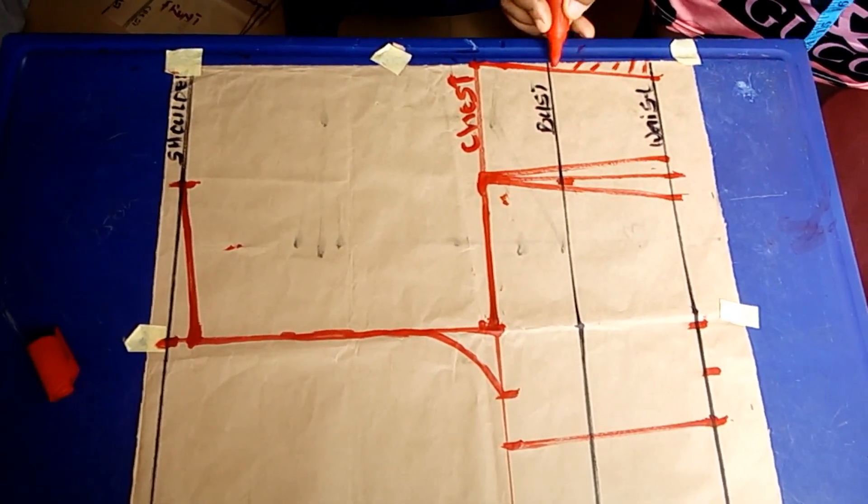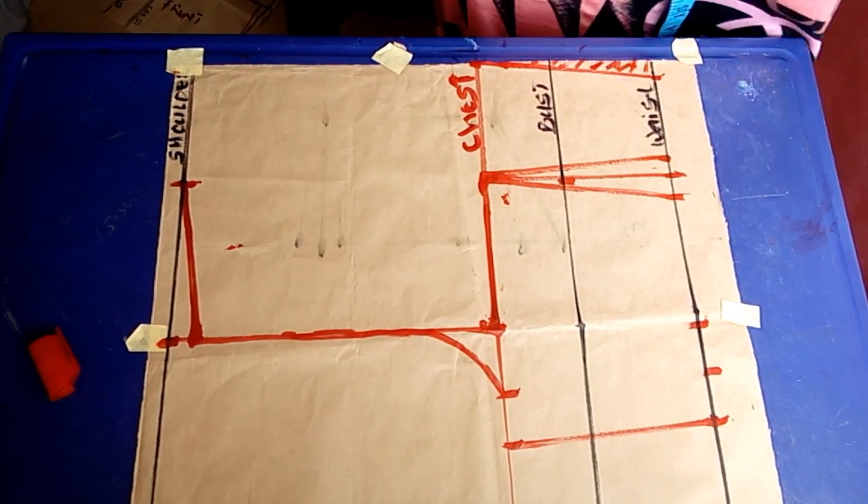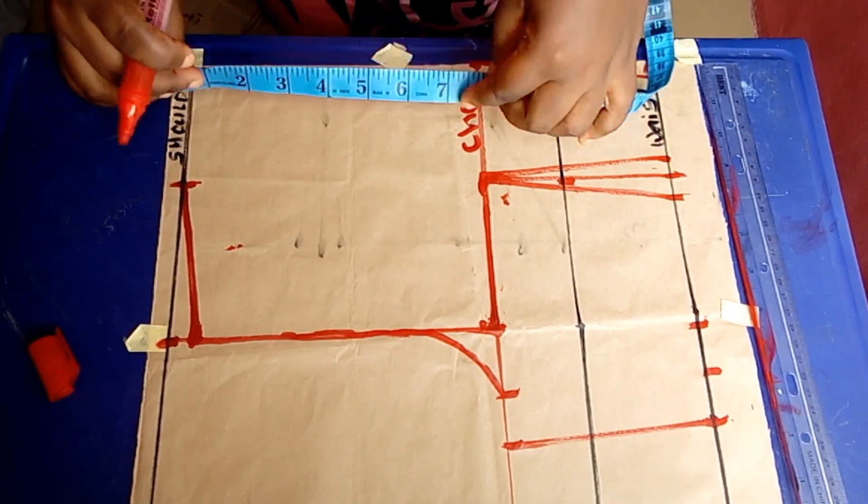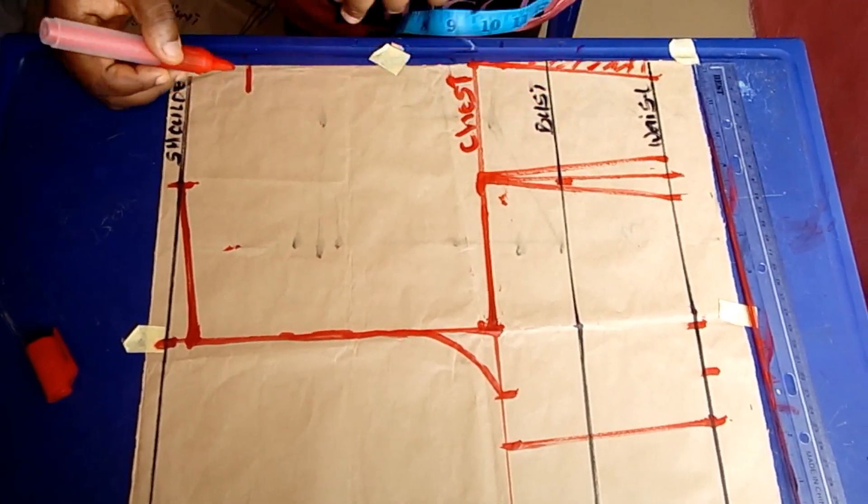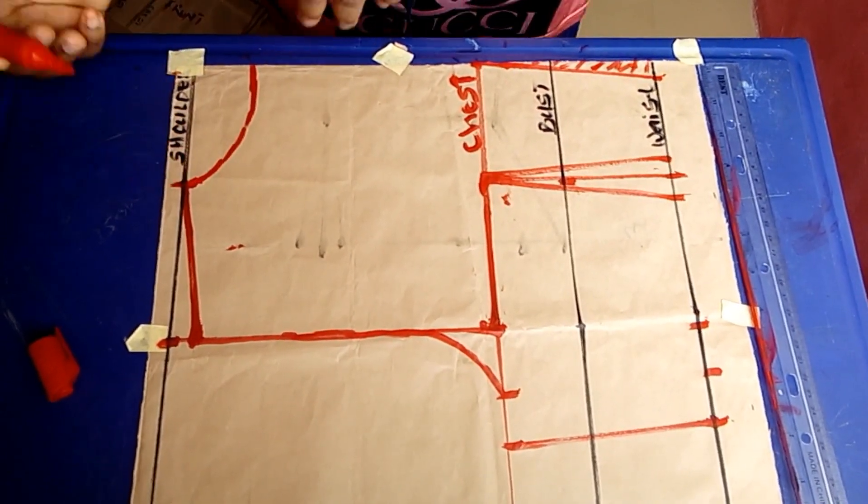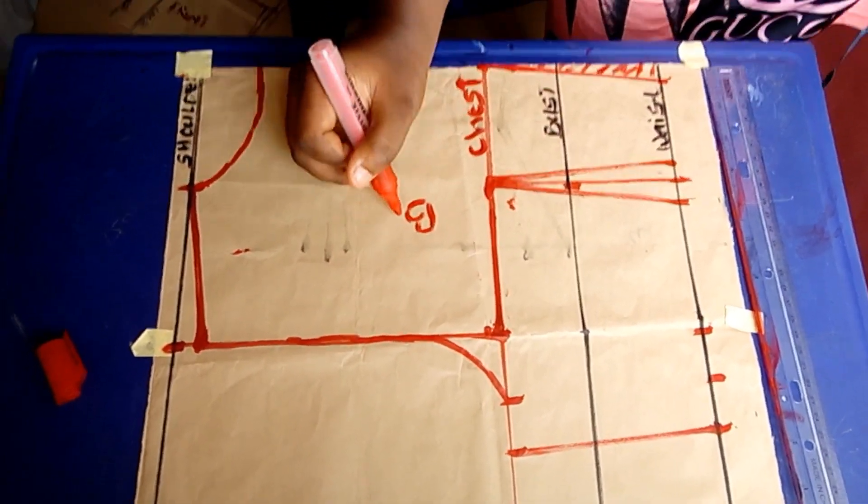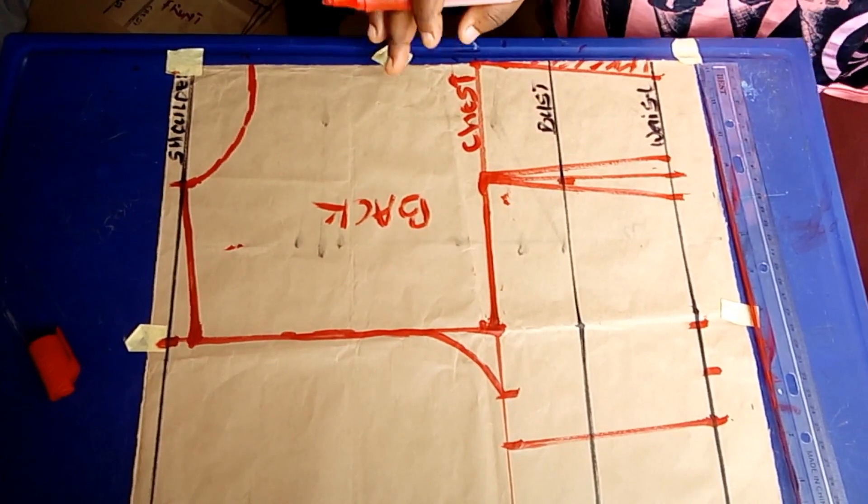For the back I'm using the neck width depth of one and a half, as you can see, and I'm labeling it the back.